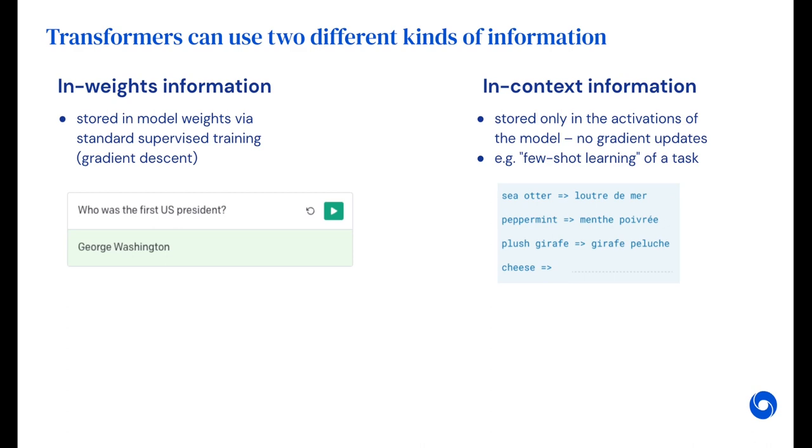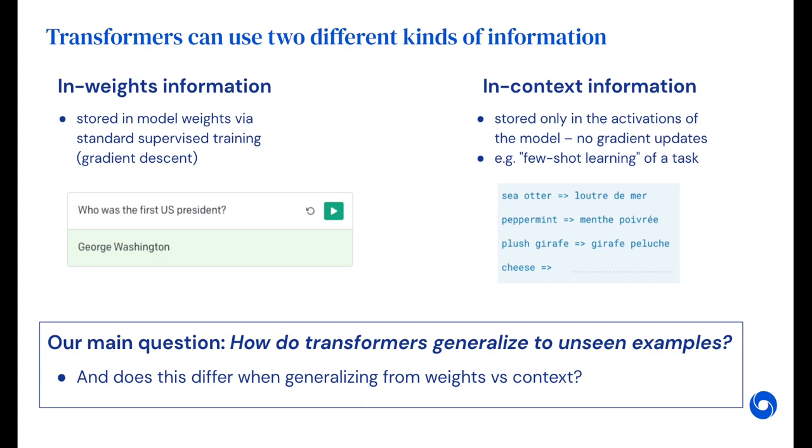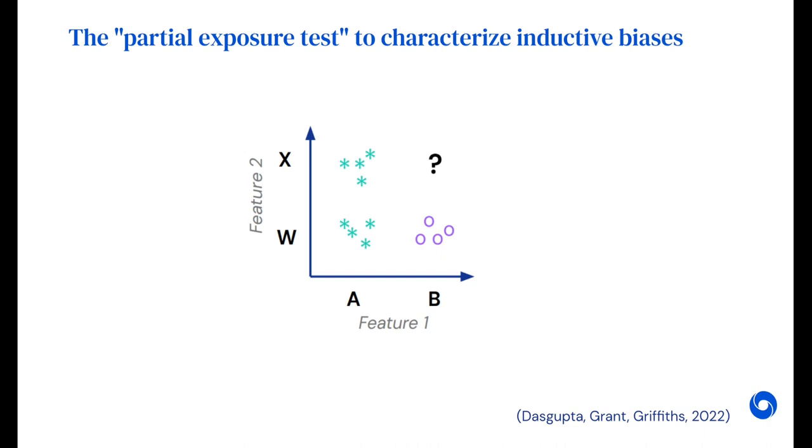Our aim in this work is to characterize how transformer models generalize, both when generalizing from weights and from context. Generalization is shaped by the inductive biases of a model. To characterize these biases in transformers, we use the partial exposure test, which was designed to distinguish between two kinds of generalization.